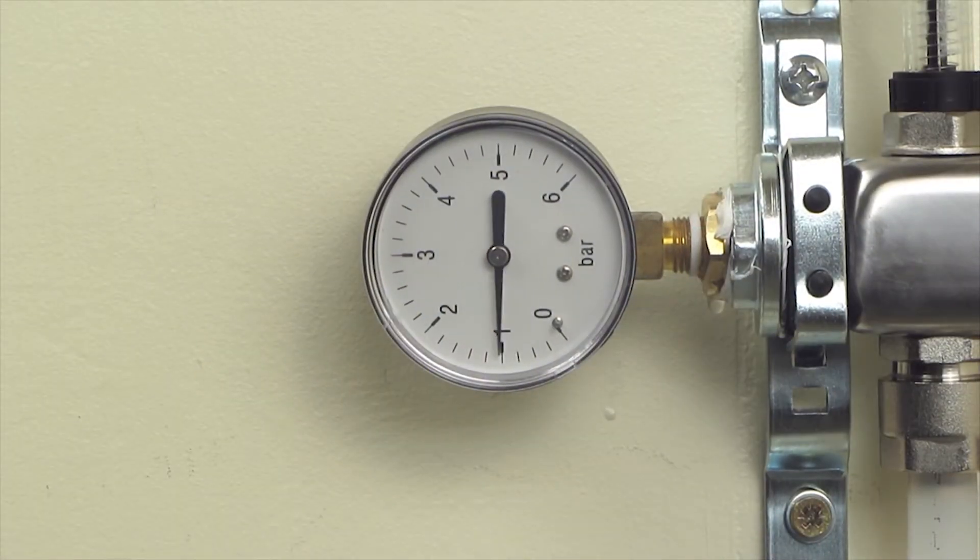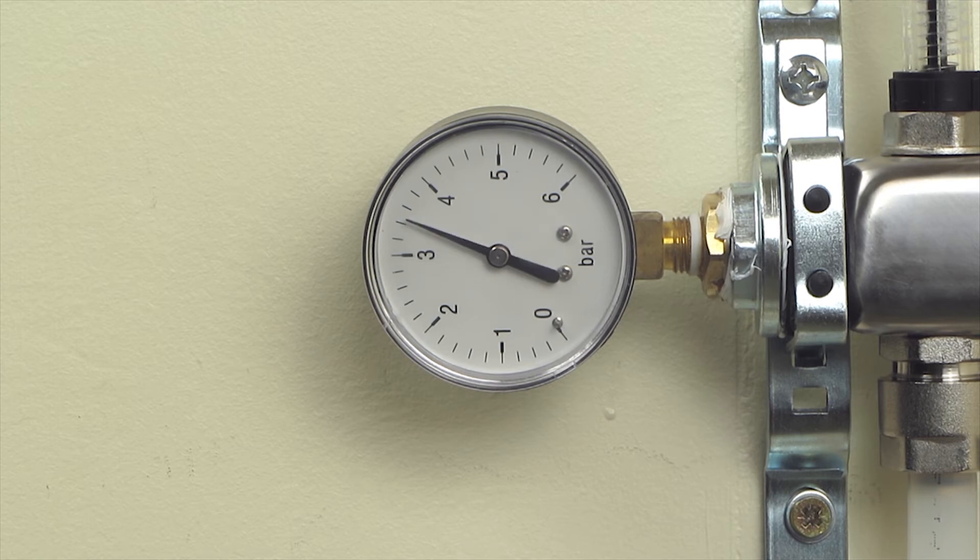Now introduce water into the manifold until 4 bar is reached on the pressure gauge. Leave the manifold under pressure for at least 10 minutes and check for leaks. If any occur, check connections for tightness.